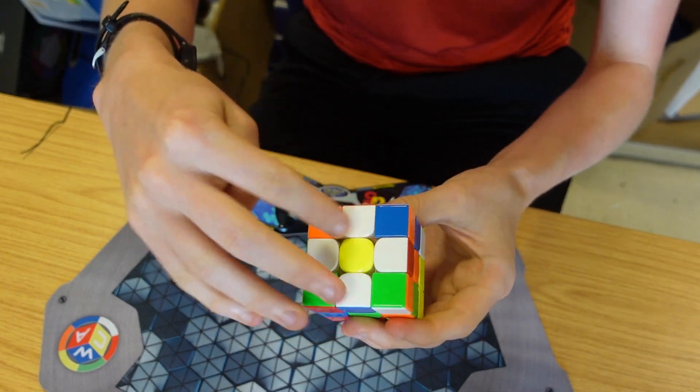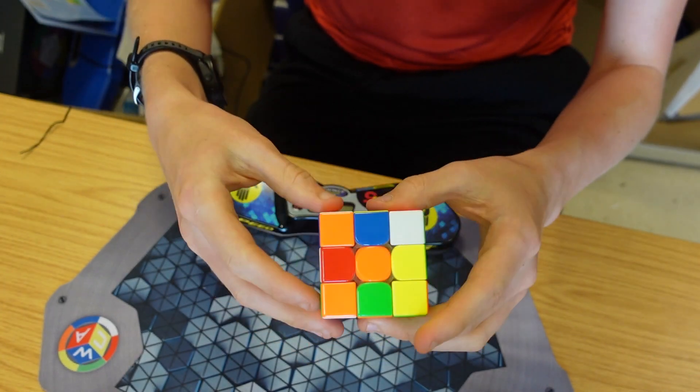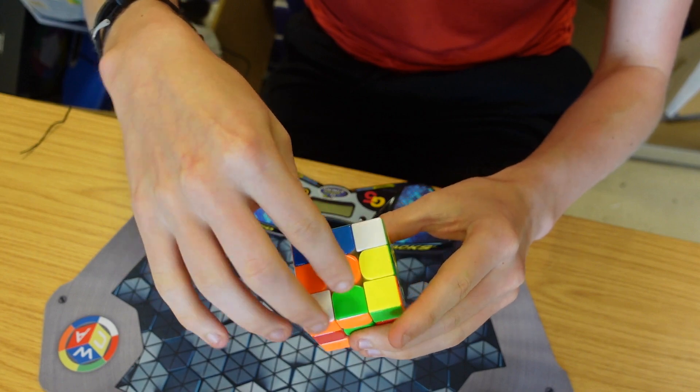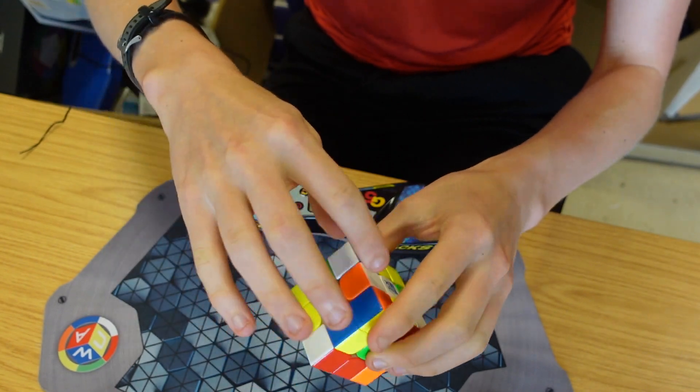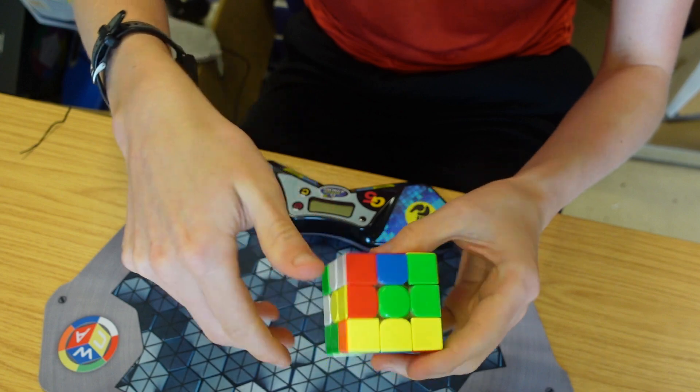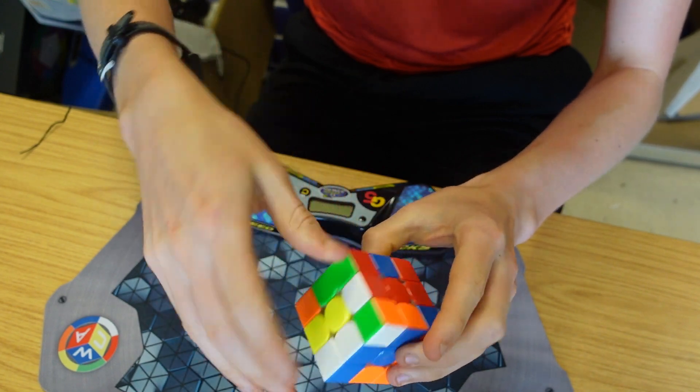Now we have what's called the daisy. Now we're going to match up these orange pieces and put them on the white side. There we go, green, and then we can do red and blue.